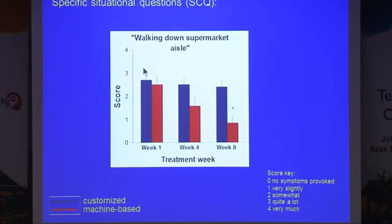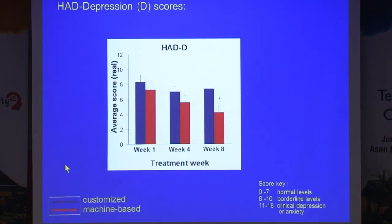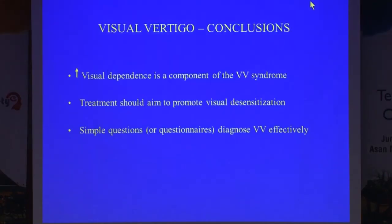You find that these patients' general symptoms improve, but in particular — if you measure with specific questionnaires like the Jacobs questionnaire — what happens when you walk down a supermarket aisle shows much more improvement in patients who had the additional machine-based visual stimulation. A rewarding finding of this paper was that the psychological symptoms, including depression in these patients, also improved much more when they were exposed to visual motion therapy.